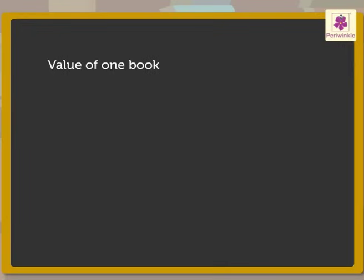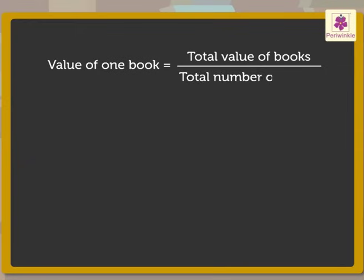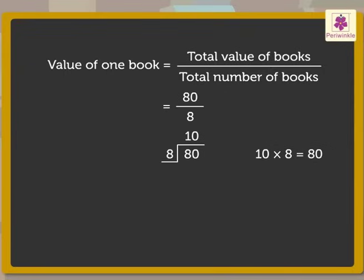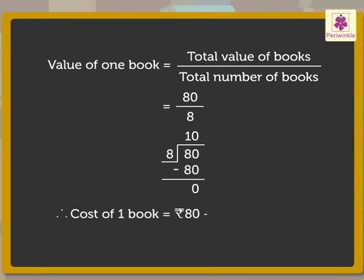Now, to get the value of 1 book, we have to divide the total value of books with the total number of books. So, here we divide 80 by 8 to get the cost of 1 book. We know 10 into 8 is equal to 80. So, we will write 10 as the quotient. Now, write 80 below the dividend. Here, let's subtract 80 from the dividend. We get 0 as the remainder.